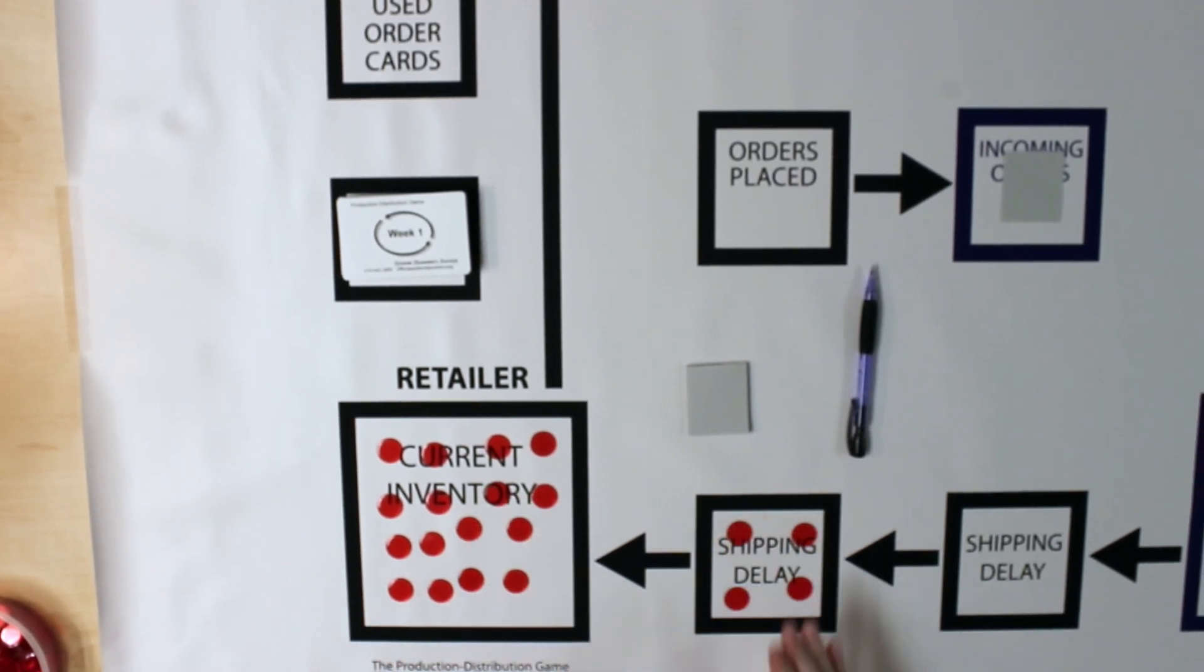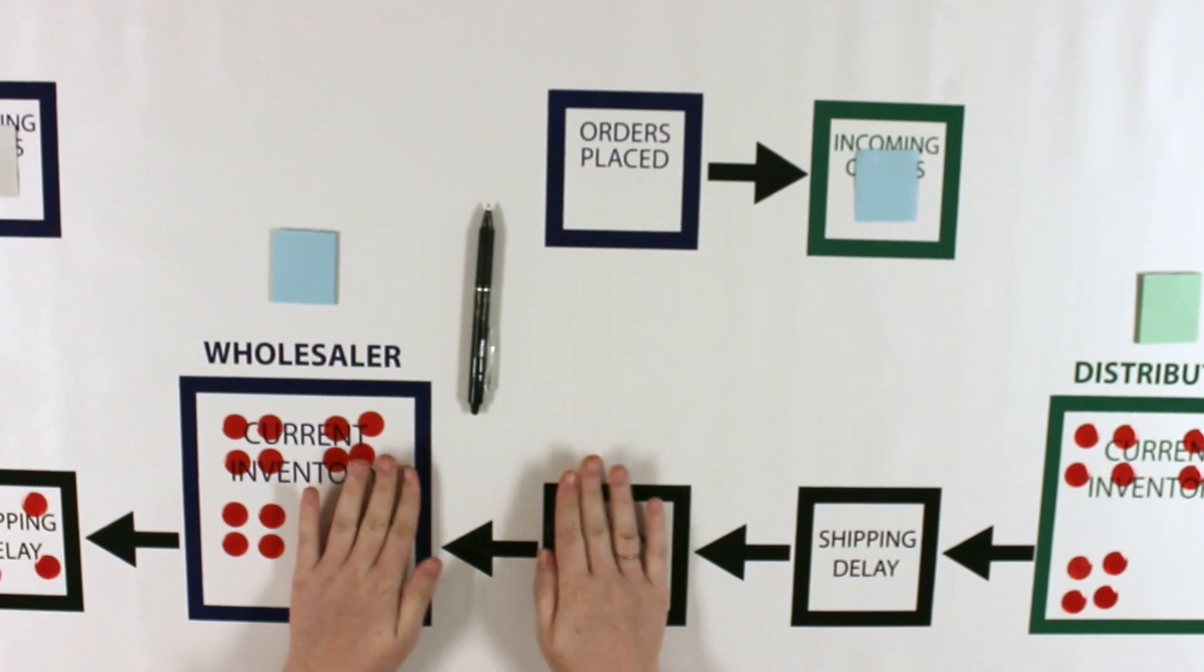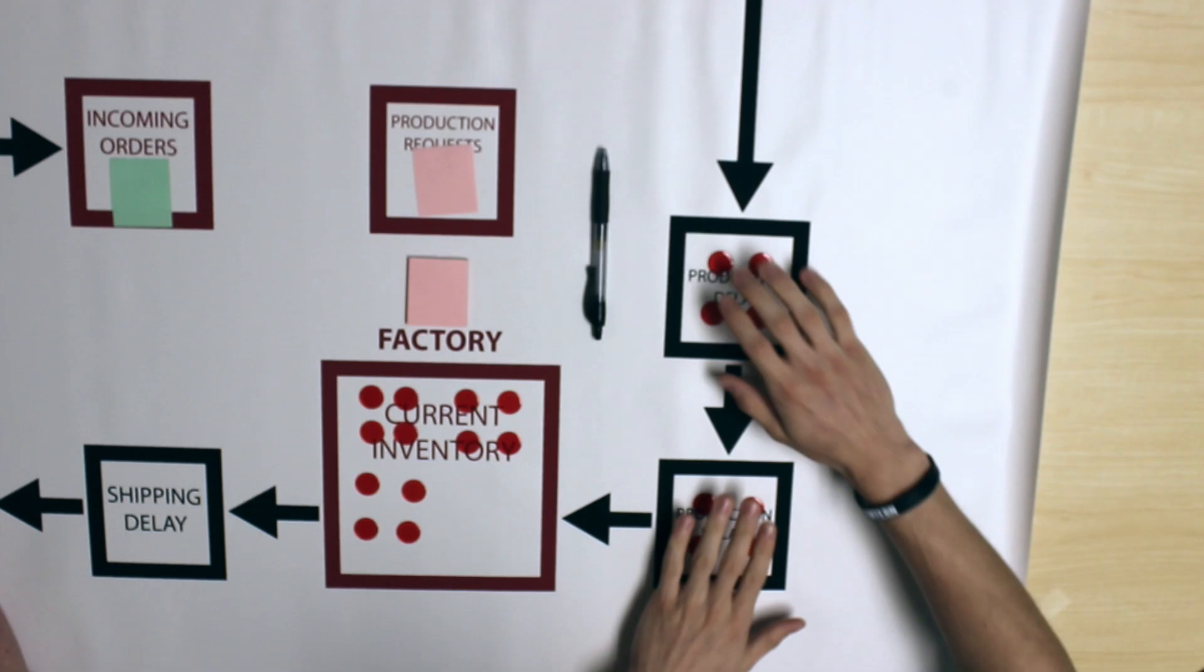Each position slides their chips at the same time by placing each hand on a shipping delay box and sliding the chips over one box.